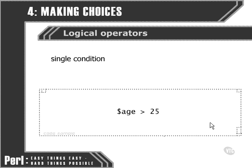If we wanted to make multiple conditions, then we need some way of combining them together so that Perl can make sense of what we're trying to specify. We need to be very precise about the way we do that. The elements we need to use are called logical operators.